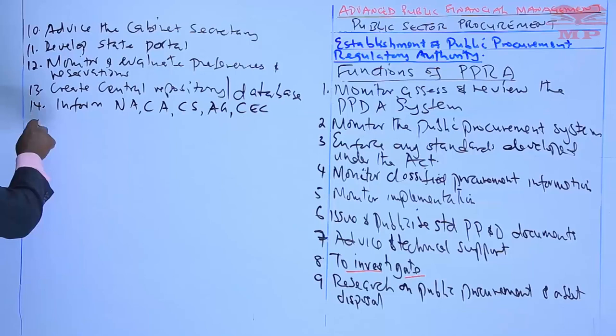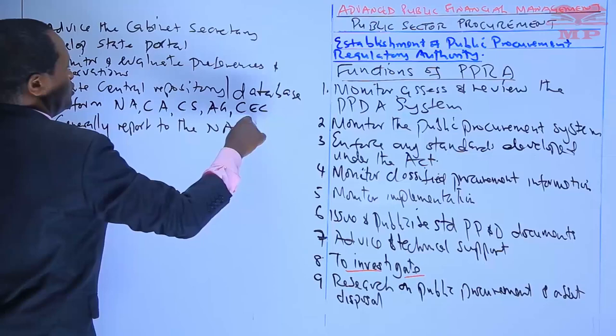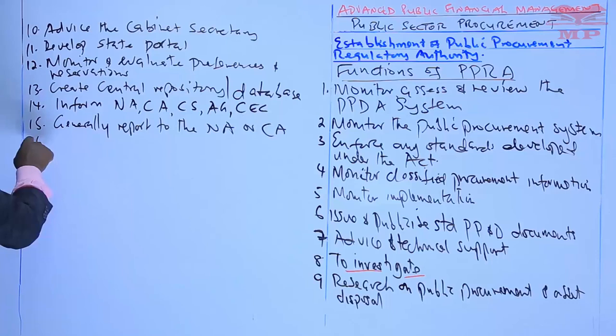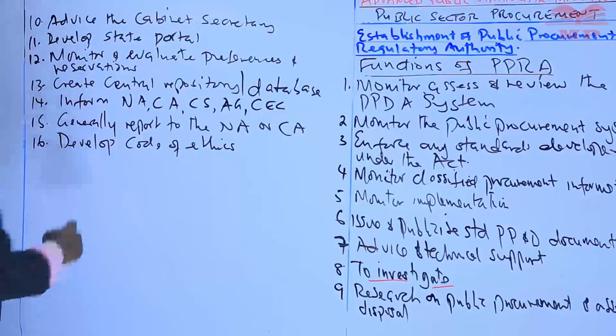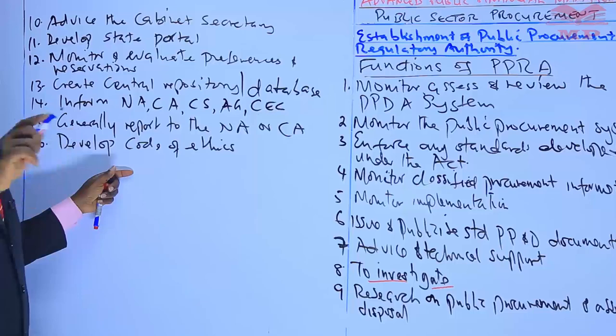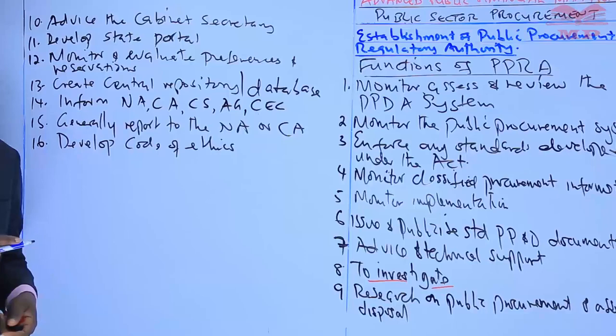Function fifteen is to generally report to the National Assembly or the County Assembly. Function sixteen is to develop a code of ethics to guide procuring entities and winning bidders when undertaking public procurement and disposal with state organs and public entities.